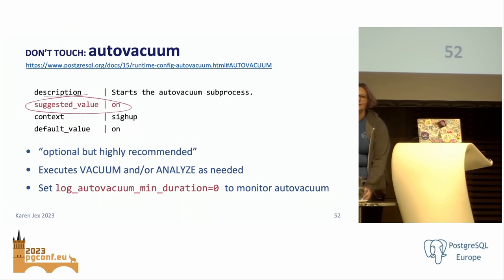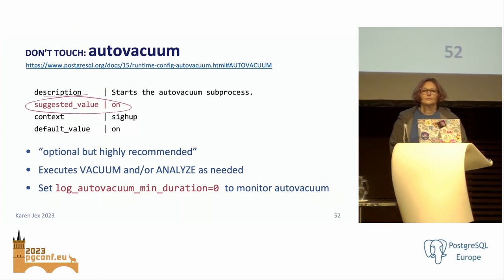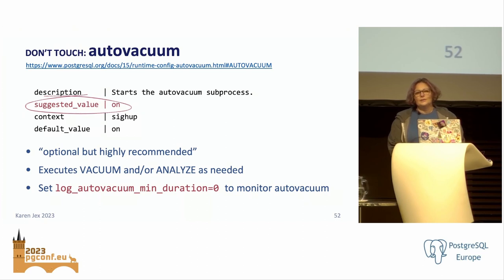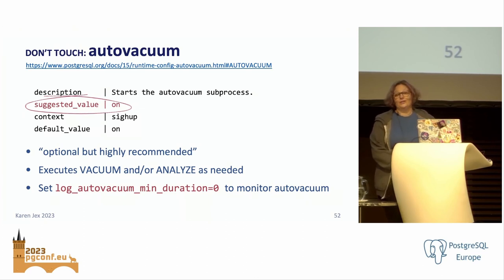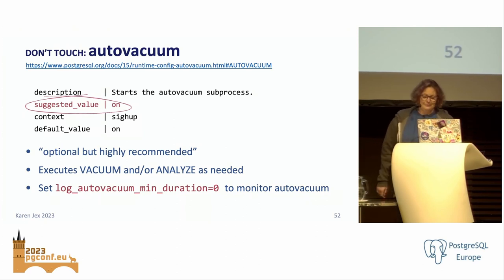Q: I have a question about effective_cache_size. The rule of thumb is 50 to 70 percent, but we have a dedicated database server with 1.8 terabytes of memory — so 50% would be about 900GB, which seems like overkill. A: It's very hard to know without knowing the size of your database, what's happening on it, how many concurrent things you've got going on. The classic consultant answer is: it depends.